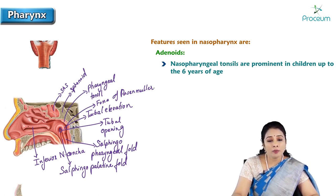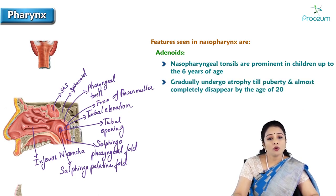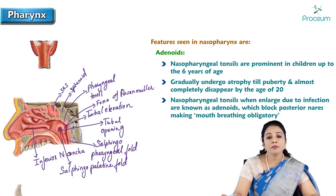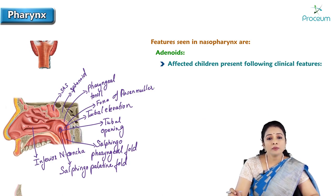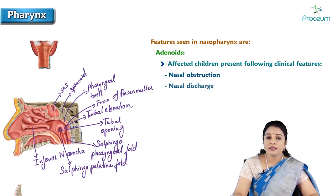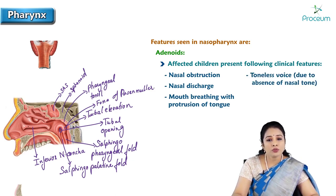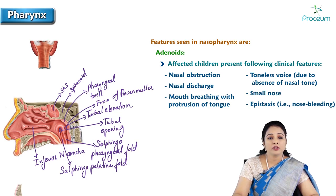An important clinical aspect associated with the nasopharynx is adenoids. The nasopharyngeal tonsils are prominent in children up to the age of 6 years, and they gradually undergo atrophy till puberty, almost completely disappearing by the age of 20. When enlarged due to infection, they are known as adenoids, which block the posterior nares making mouth breathing obligatory. The affected children present with nasal obstruction, nasal discharge, mouth breathing with protrusion of the tongue, toneless voice due to absence of nasal tone, small nose, and epistaxis (nosebleeding).